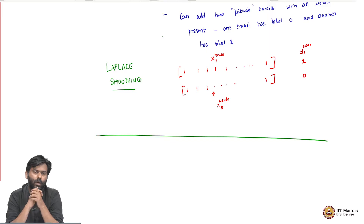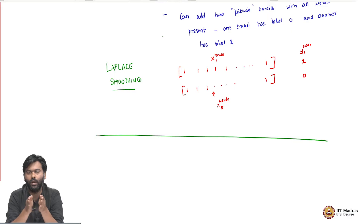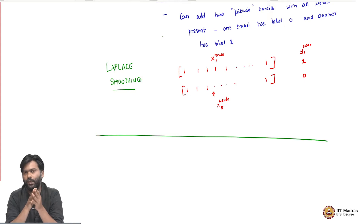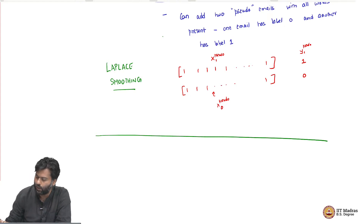In terms of the features, we know how this decision is made using Bayes rule and all that, but can we argue something about the decision function itself? It is an interesting thing to think about. Let us talk about this next.